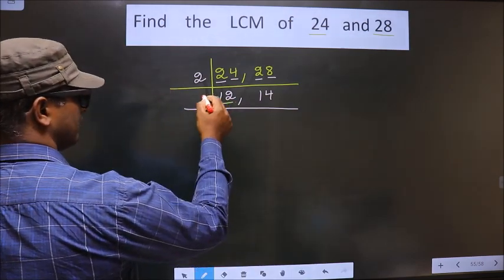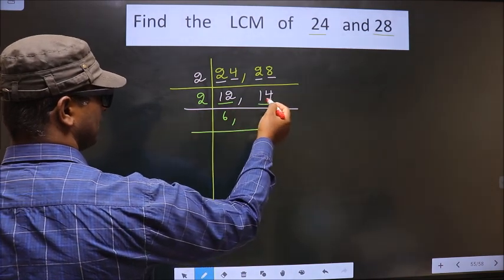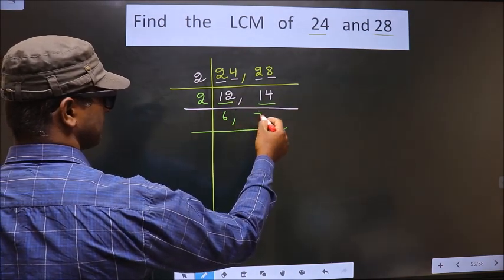Now, here we have 12. 12 is nothing but 2 times 6 is 12. Here we have 14. When do you get 14 in 2 table? 2 times 7 is 14.